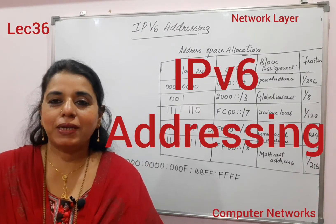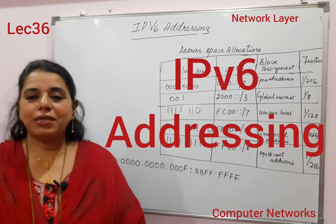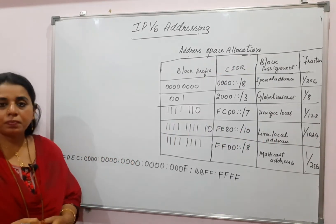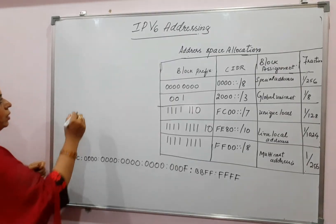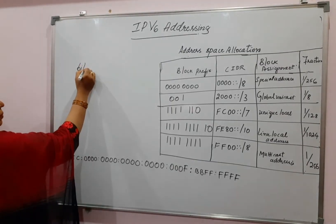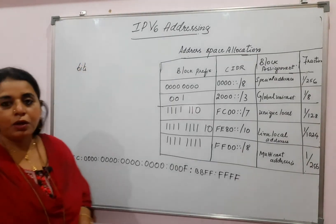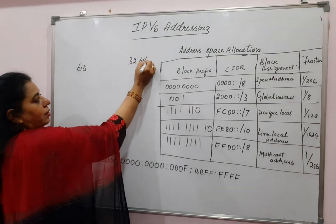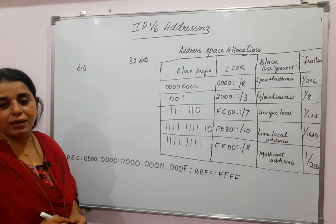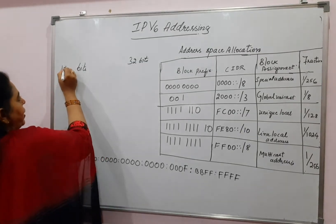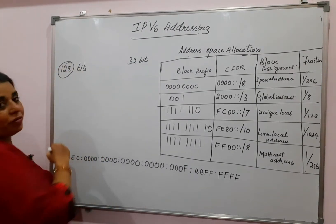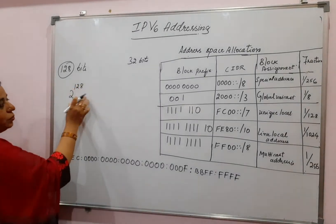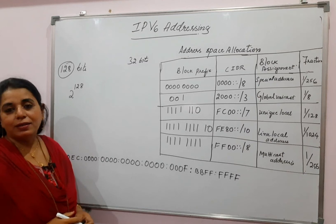Hello viewers, welcome back to my channel. Today's topic of discussion is IPv6 addressing. The first thing you should know is how many bits are used to represent an IPv6 address. For IPv4, 32 bits are used. Here in IPv6, 128 bits are used, so 2 to the power of 128 — that is a very huge number of possible IP addresses.